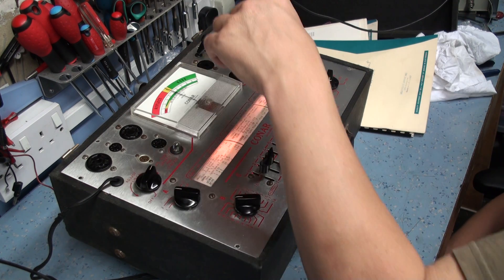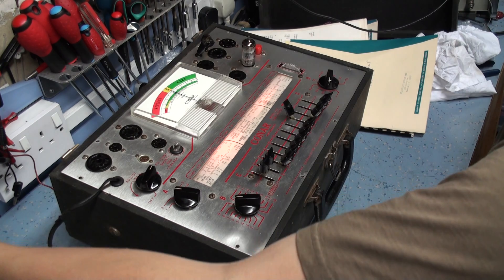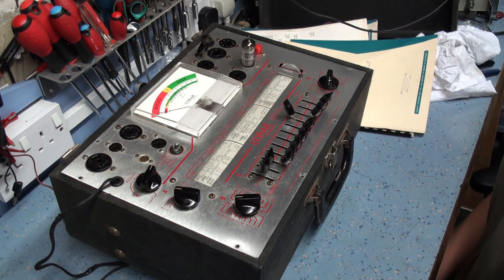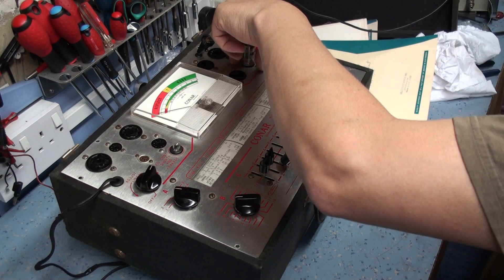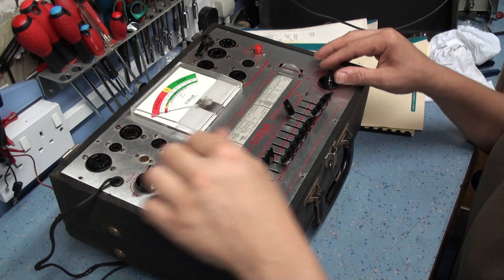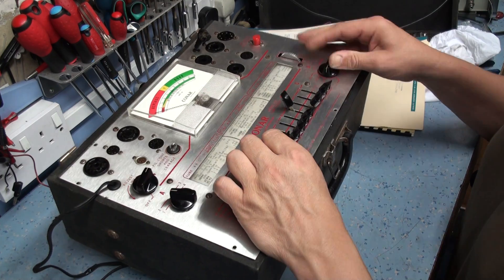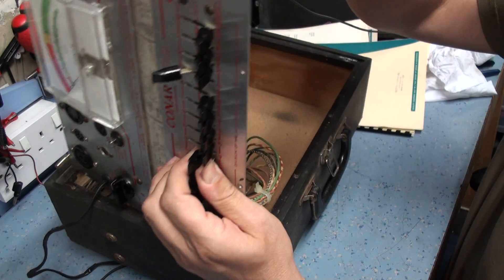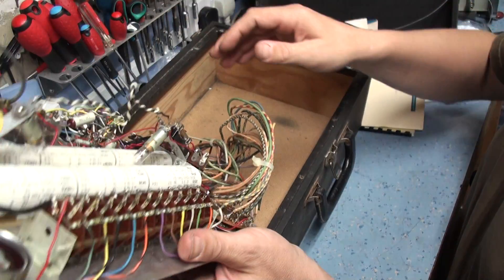The wall wart thing I'm using, the step-down transformer at the moment is actually getting quite hot, and I think I'm probably exceeding its rated capability inside. It's also only rated about 60, 60 watts, so it's probably using close on that.